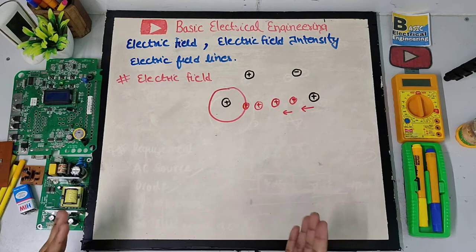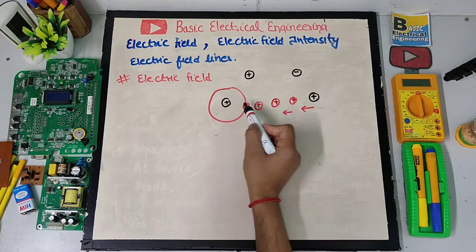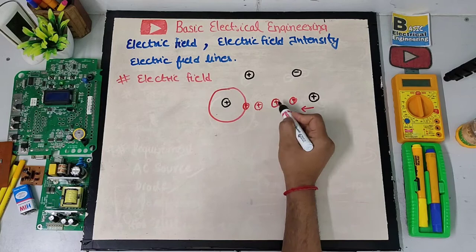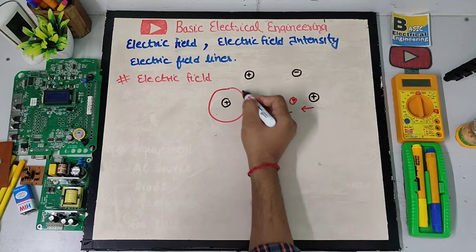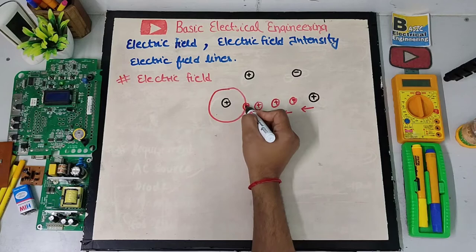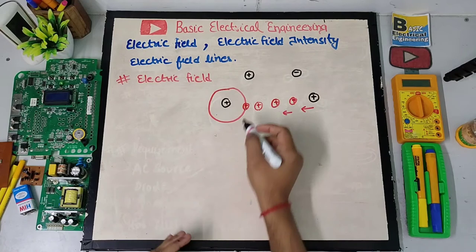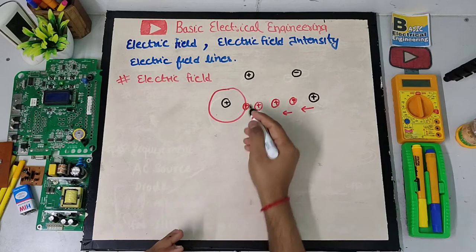We know the properties of charge: two opposite charges attract and the same charges repel. So if this charge is positive, a force will act on the other charge. This region — the area surrounding the charge where a force is experienced — is what we call the electric field. The electric field is the space surrounding a charge by virtue of which it experiences a force of attraction or repulsion on another charge.